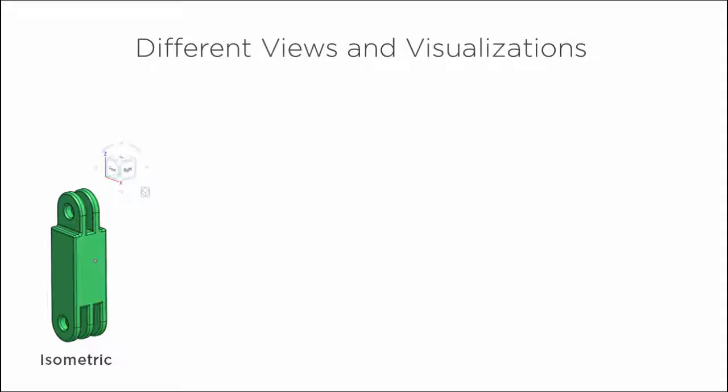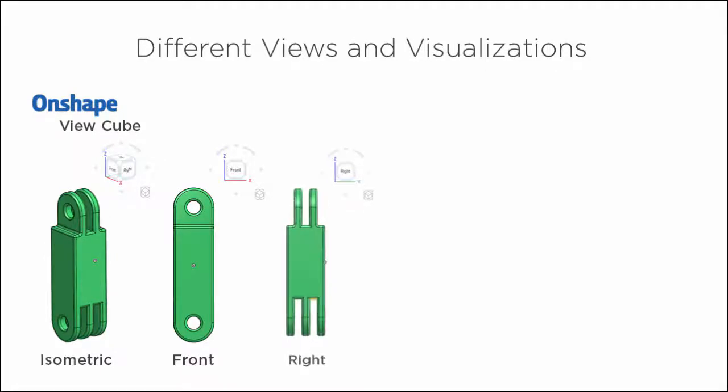Traditionally, when you create a 2D drawing of a part, you create various views that show the part from the front, right and top. In Onshape, you can quickly orient the view to these default planes by clicking on the according planes in the view cube. Here you see the part from the front, and the right, and the top.